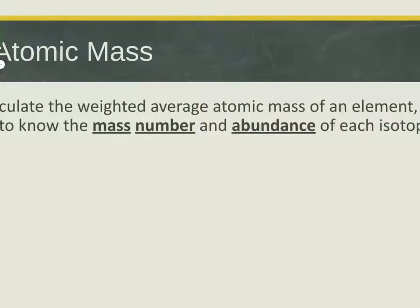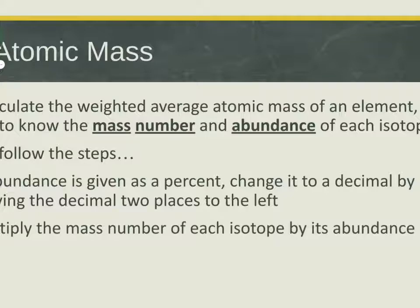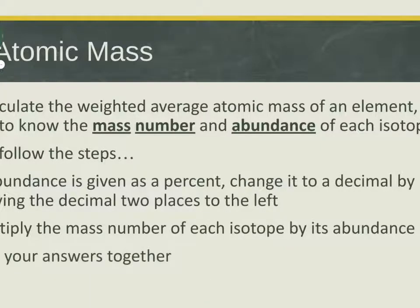To calculate the weighted average atomic mass of an element, you need to know the mass number of each isotope and its abundance. I'll give you the abundances — you don't need to memorize them. If the abundance is given as a percent, change it to a decimal by moving the decimal point two places to the left. Then multiply the mass of each isotope by its abundance. Do that for each isotope, add all the answers together, and round to five total digits — not five decimal places, five total digits.